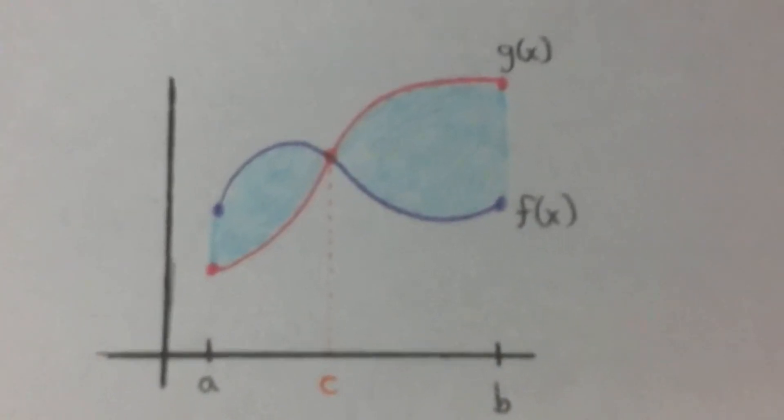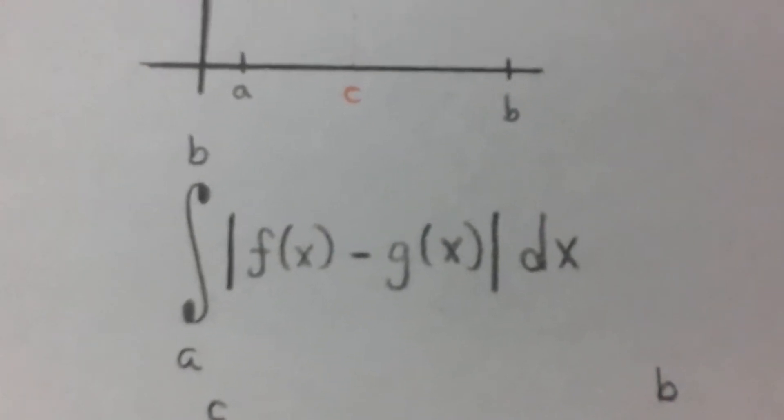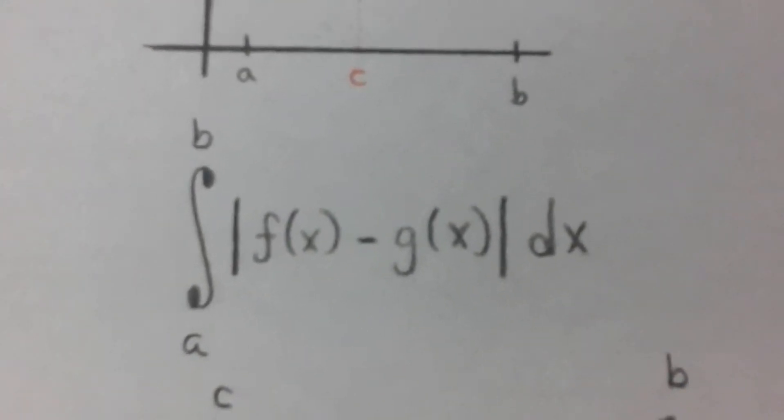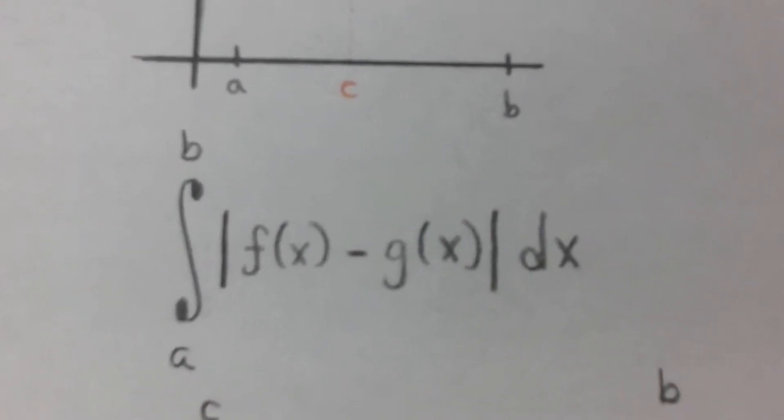So what I do is I begin with the absolute value, because the absolute value forces everything to be positive. So I calculate the integral from a to b of the absolute value of f minus g.